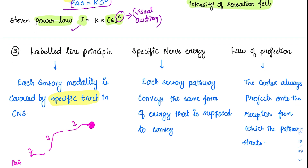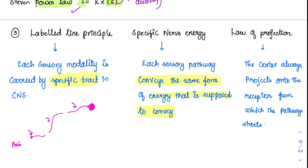Then there is specific nerve energy. Each sensory pathway converts the same form of energy that it is supposed to convey. A particular sensory pathway will always convey the same sensations. For example, a visual stimulus is normally stimulated by electromagnetic rays. Even if it is also stimulated by mechanical pressure, the visual impulses will still be conveyed in the same manner. So whatever the sensory pathway carries — if stimulated by other means — it will still carry that same specific energy.